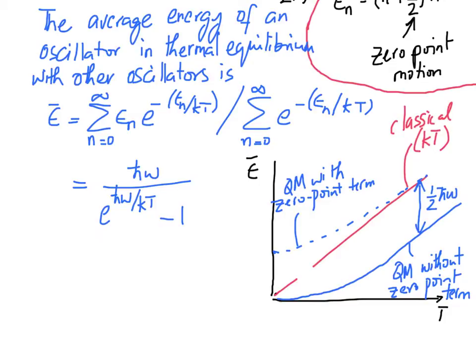The fact that the quantum mechanical result without the zero point term is different from the other two results even at high temperatures is not a problem as far as the specific heat is concerned, because the specific heat is the first derivative of the energy with respect to temperature. Essentially the slope of this curve is what is related to the specific heat, and you can see that the red curve as well as the two blue curves is actually the same at high temperatures. So the high temperature specific heat is correct regardless of whether you include the zero point term or not.